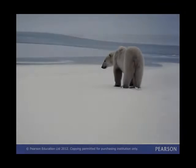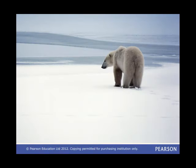There are two main types of polar environment. Ice cap environments, where no month in the year has an average temperature above zero degrees centigrade, and tundra environments, where at least one month has an average temperature above zero degrees.